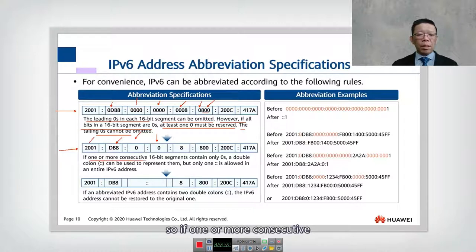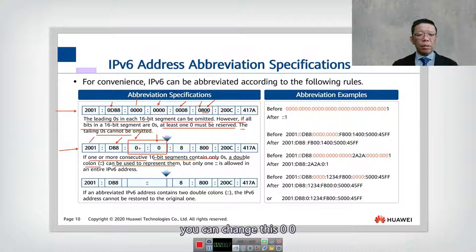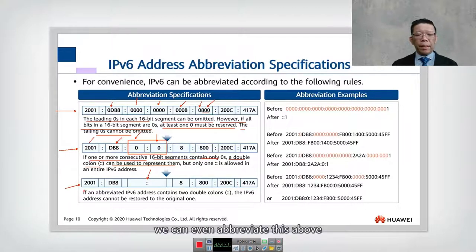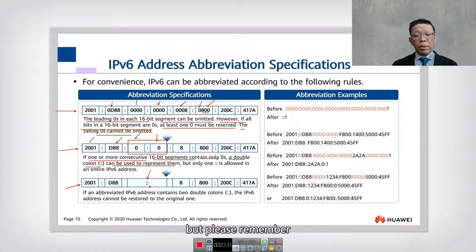If one or more consecutive 16-bit segments contain only zeros, a double colon can be used to represent them. For example, where you have a segment of all zeros, you can use a double colon to represent all those zeros. We can abbreviate the IPv6 address further to '2001:db8::' followed by the remaining segments. This double colon replaces the consecutive all-zero segments.